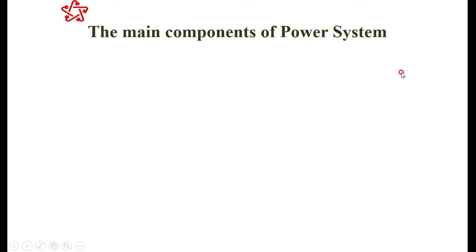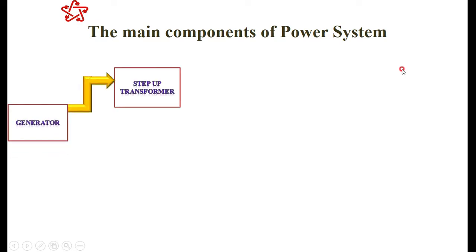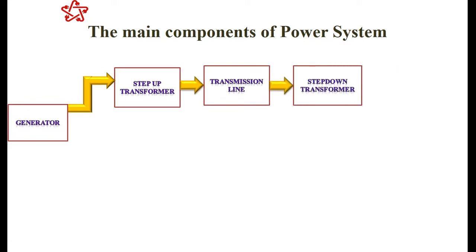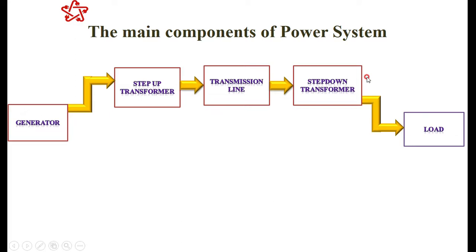There are three main components in the power system: the generator, the transformer, and the transmission line. At the distribution level there is again a transformer — a step-down transformer — while at the transmission level it is a step-up transformer. The voltage is generated at the generating station at a level of around 13.8 kV to 24 kV.